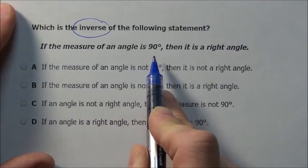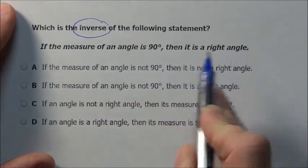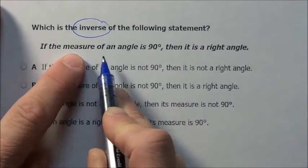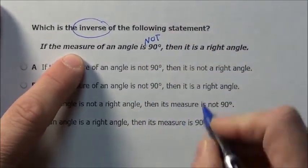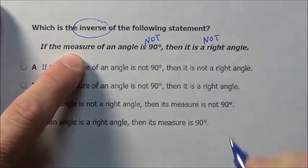So it says if the measure of an angle is 90, then it is a right angle. The inverse of this would be if the measure of an angle is not 90, then it is not a right angle.